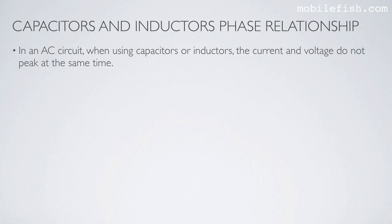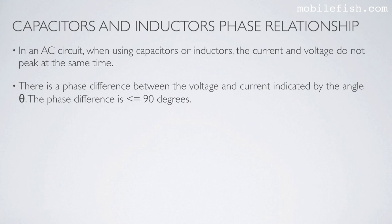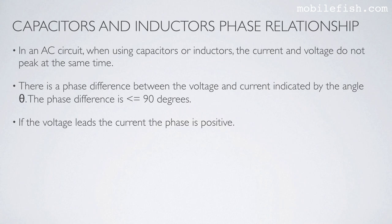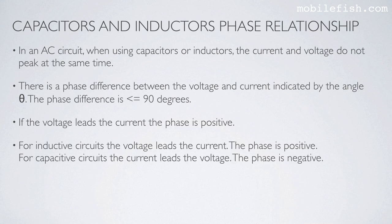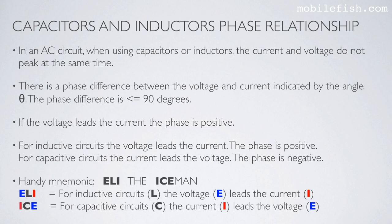In an AC circuit, when using capacitors or inductors, the current and voltage do not peak at the same time. There is a phase difference between the voltage and current, indicated by the angle theta. The phase difference is smaller than or equal to 90 degrees. If the voltage leads the current, the phase is positive — this applies to inductive circuits. For capacitive circuits, the current leads the voltage and the phase is negative. A handy mnemonic is ELI the ICEman: L indicates an inductive circuit where voltage leads current; C indicates a capacitive circuit where current leads voltage.